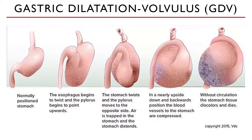When there is direct pressure on the caudal vena cava and the portal vein, there is decreased blood flow to the heart, so the heart cannot maintain its normal cardiac output. When it has decreased cardiac output, there is decreased blood flow to everything the heart supplies — the brain, kidneys, pancreas, gastric mucosa, and small intestine. That is why the fatality rate for this syndrome is 15 to 20 percent, or one in five dogs who suffer from GDV die from it.